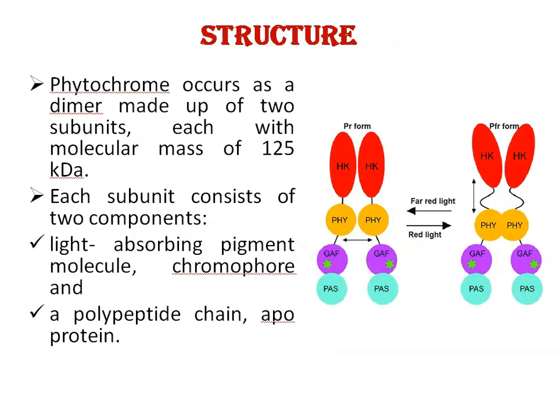Structure of phytochrome: Phytochrome is a soluble chromoprotein with a molecular mass of 250 kDa. Phytochrome occurs as a dimer made up of two subunits — this is one and this is the second subunit — each with a molecular mass of 125 kDa. Each subunit consists of two components: one is a light-absorbing pigment molecule, that is the chromophore, and the second is a polypeptide chain, the apoprotein.